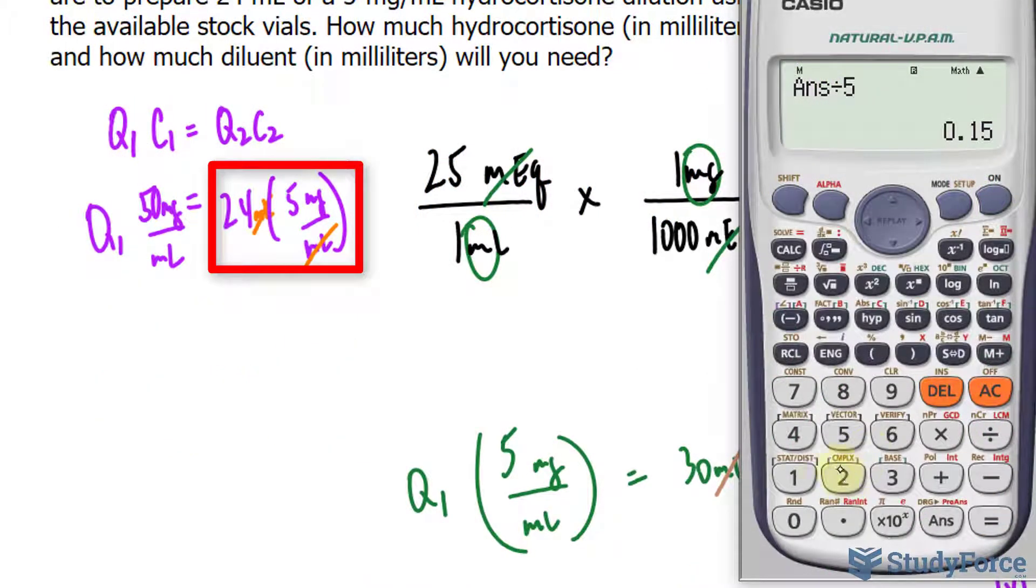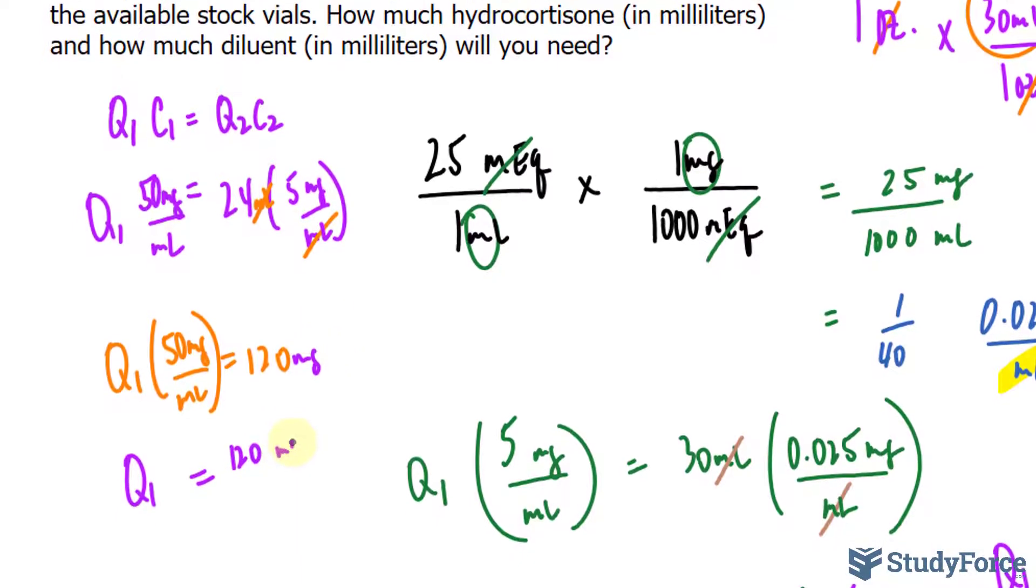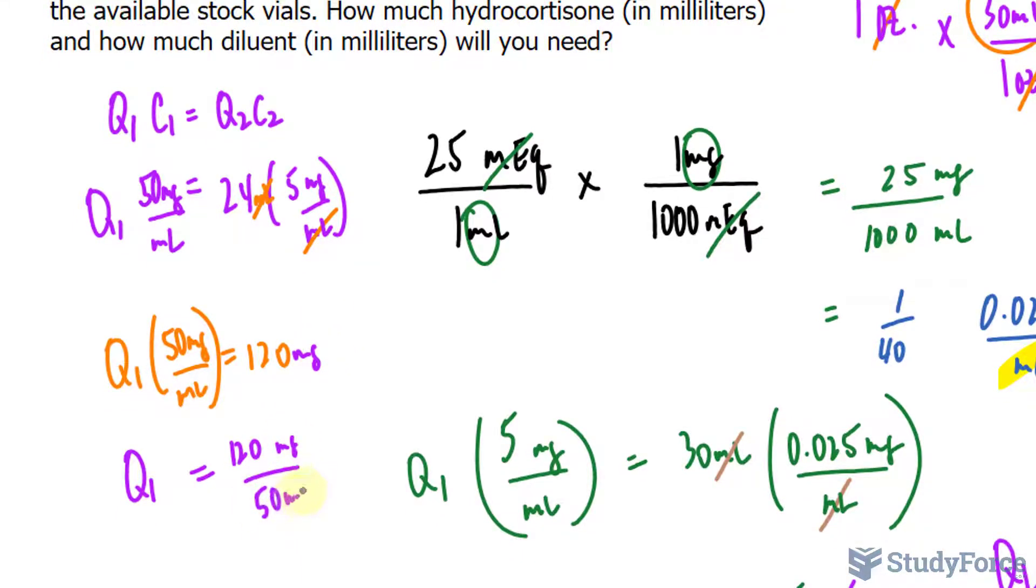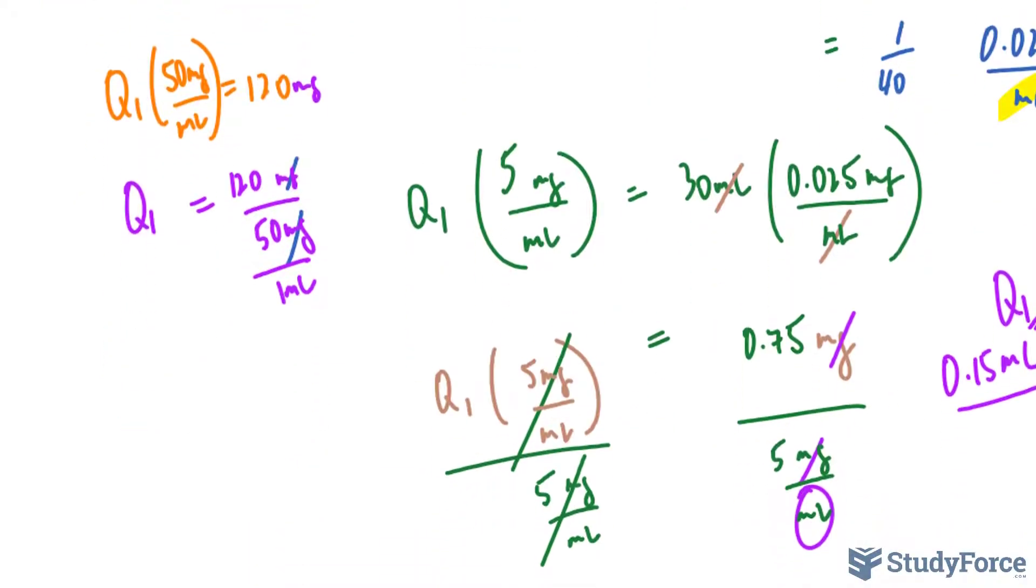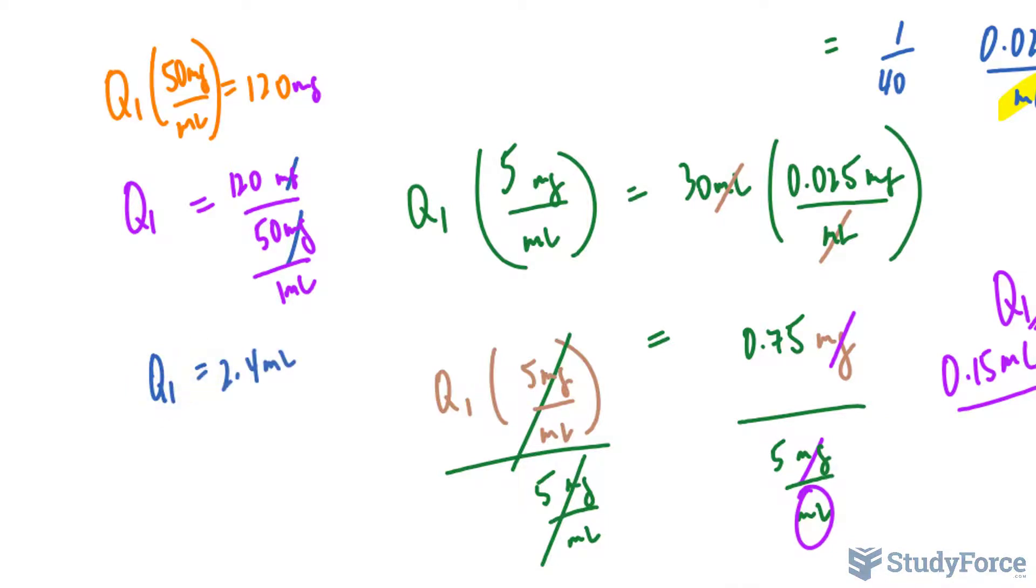We will multiply 24 and 5 together. We get 120. 120 equals Q1, 50 mg per ml. And I'll divide both sides by 50 so I can isolate for Q1. So 120 mg per 50 mg per 1 milliliter. This unit and that unit cancel out. Dividing 120 by 50 gives us a value of 2.4. So that's how much of the stock solution we have, 2.4 milliliters at a concentration of 50 milligrams per milliliter.